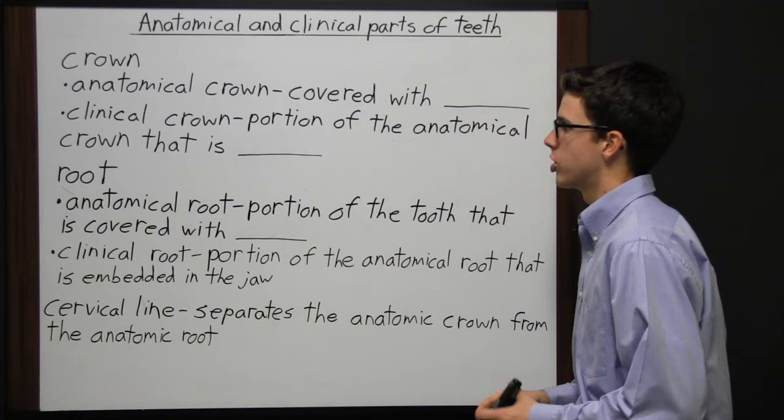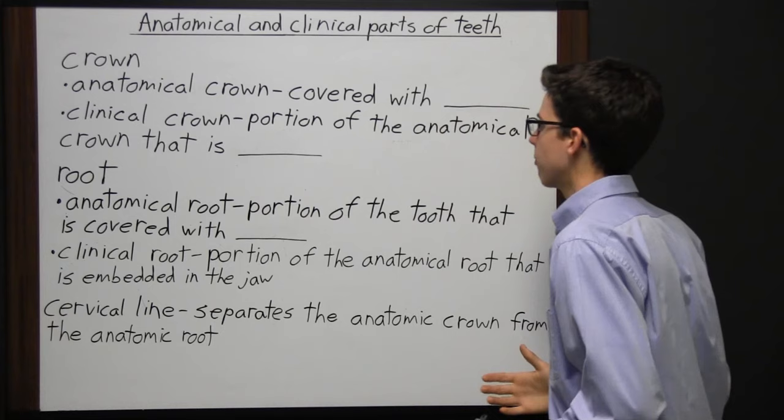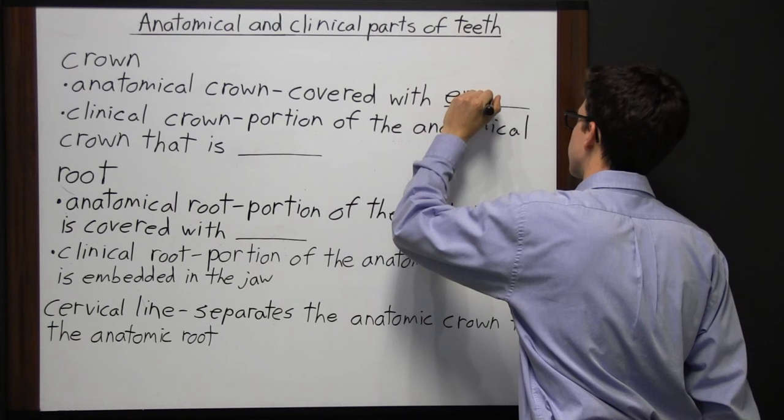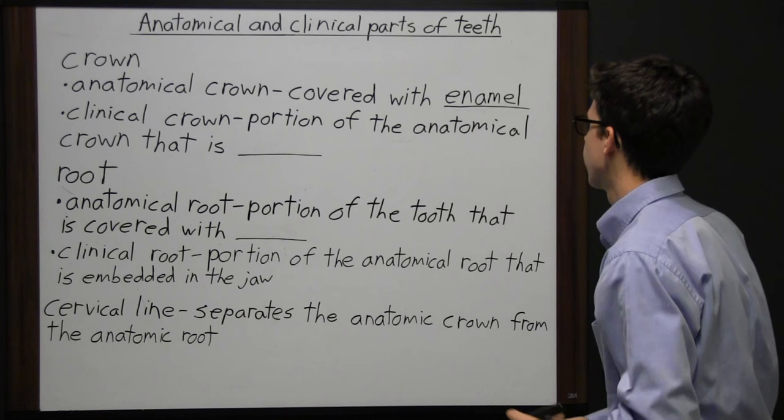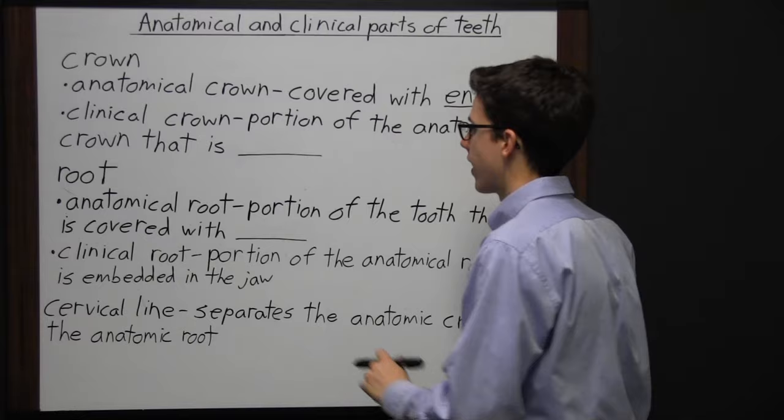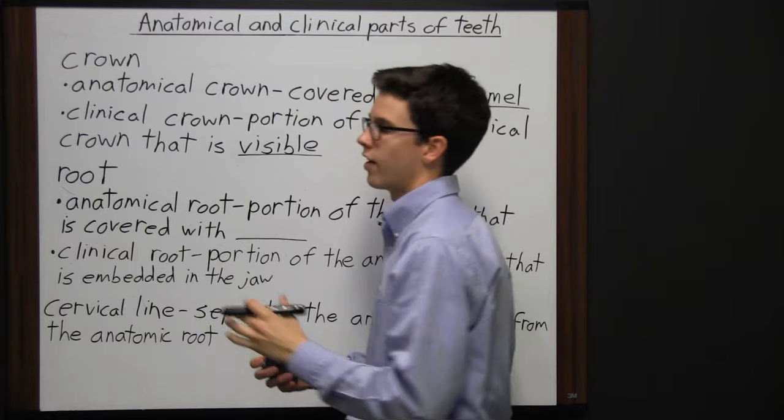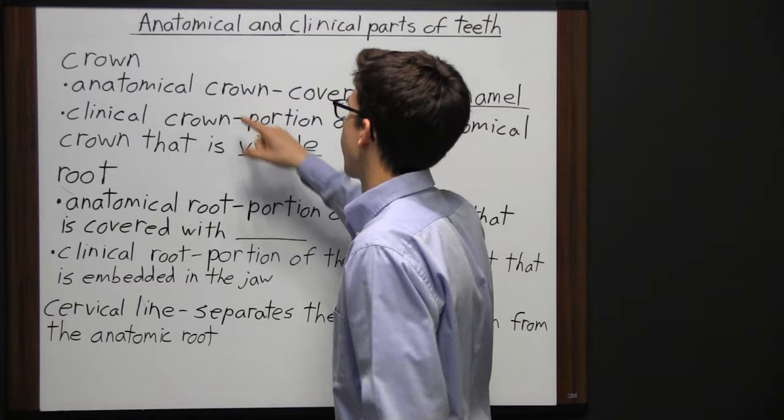When dealing with the terminology of teeth, you may come across the terms anatomical and clinical. The anatomical crown is all of the tooth that is covered with enamel. The clinical crown is the portion of the anatomical crown that is visible — it's the part of the tooth you see when you look in the mouth.